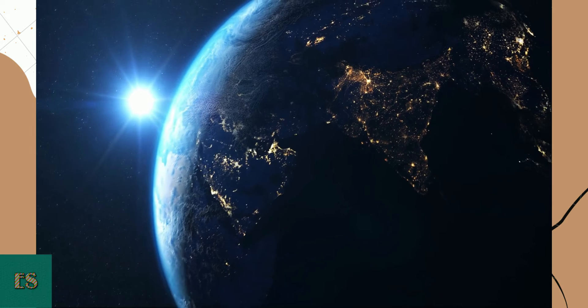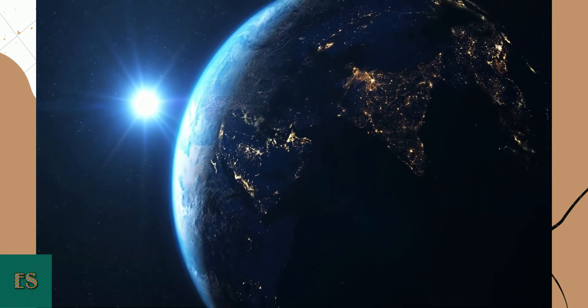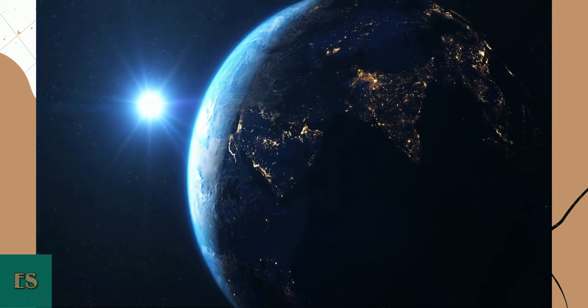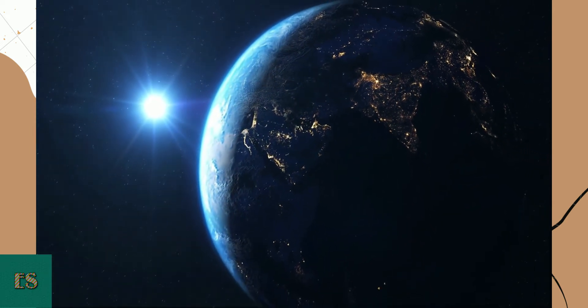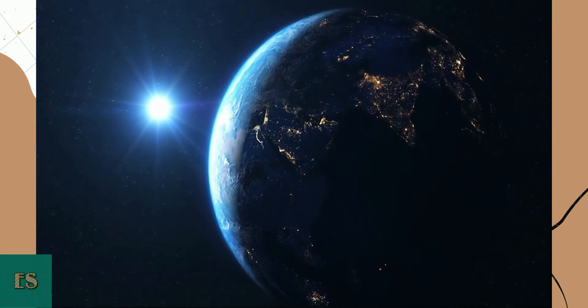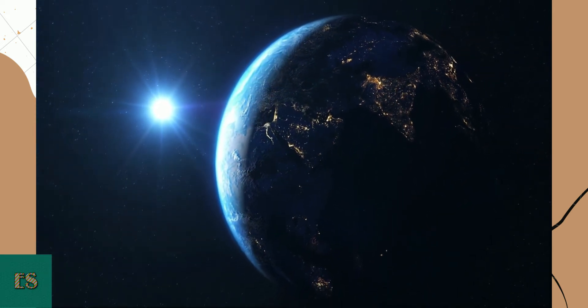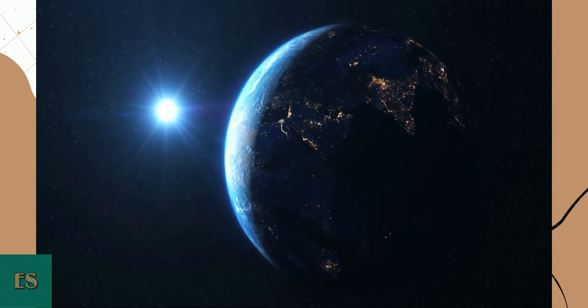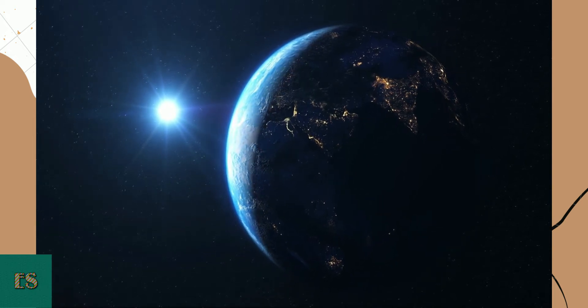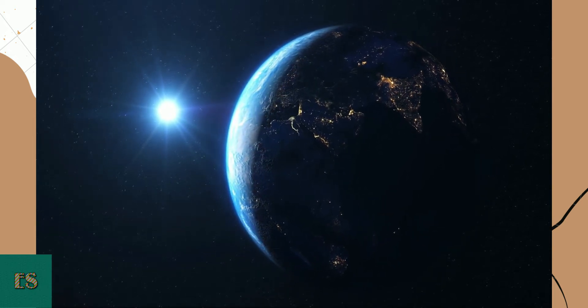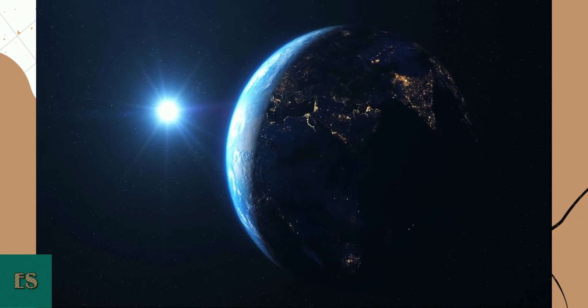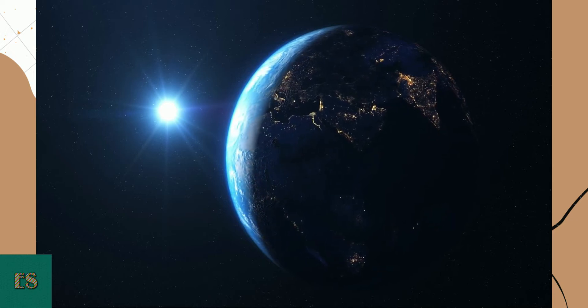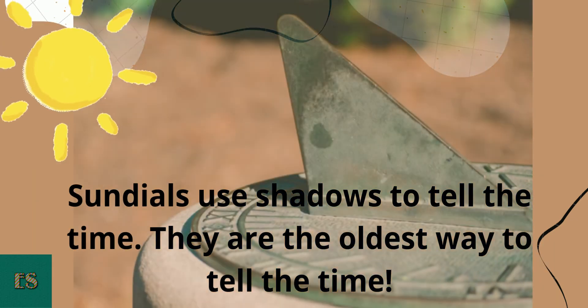This is because the earth moves around the sun and the sun is in a different place in the sky at different times of the day. Sun Dials use shadows to tell the time. They are the oldest way to tell the time.